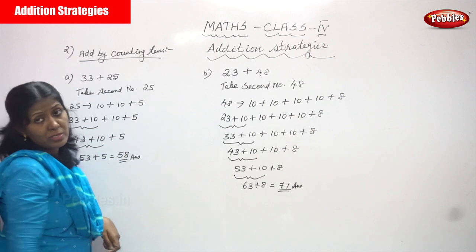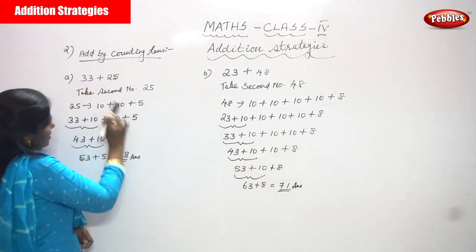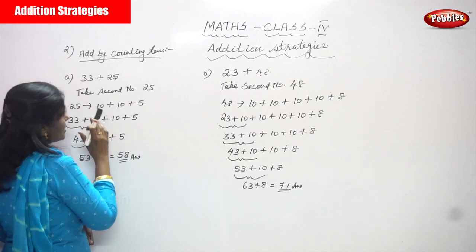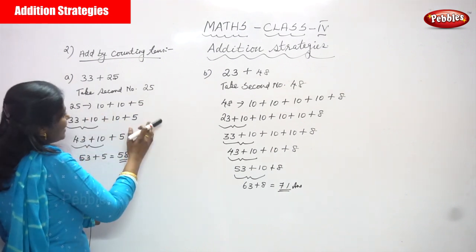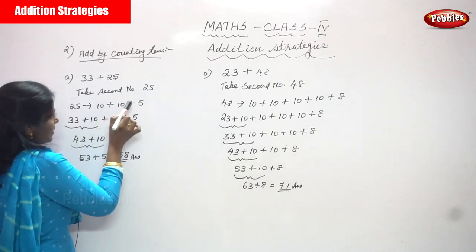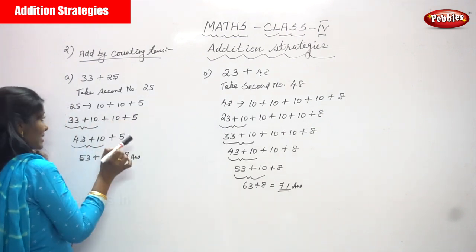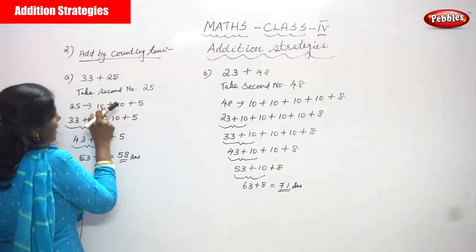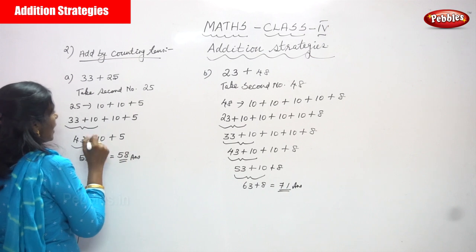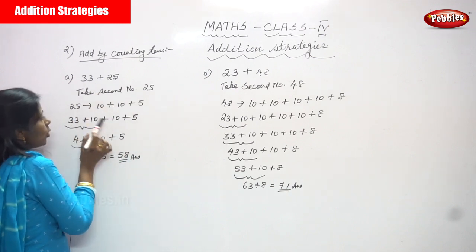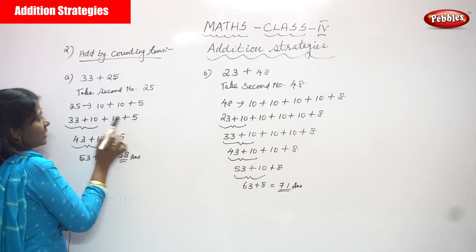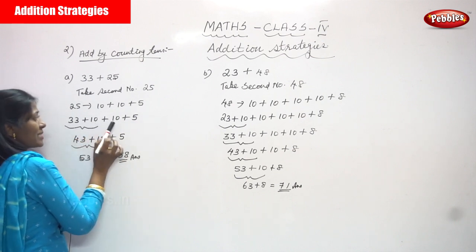I'm using the add-by-counting-tens method here. So I'm splitting 25 as 10 plus 10 plus 5. Now I write the first number 33, and the splitting of 25 gives: 33 plus 10 plus 10 plus 5.